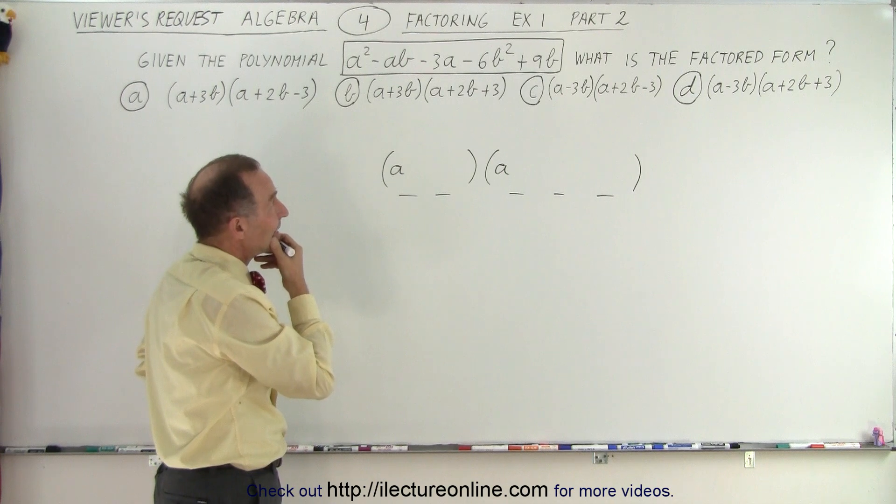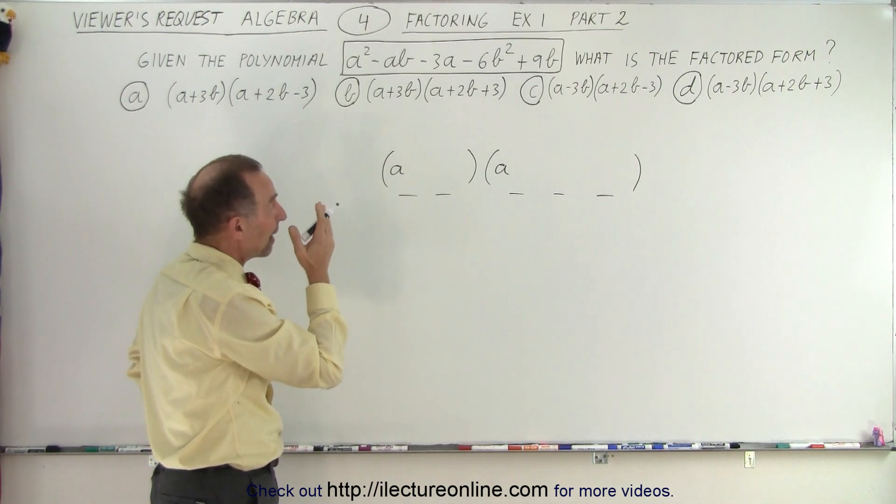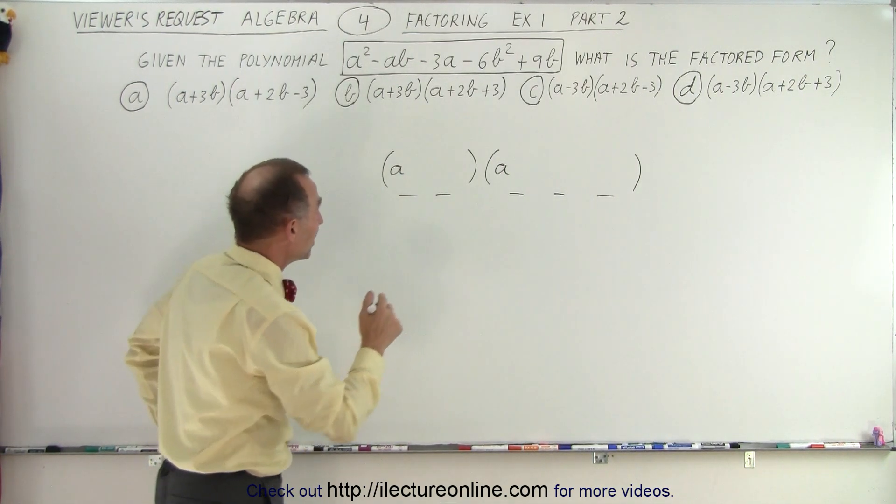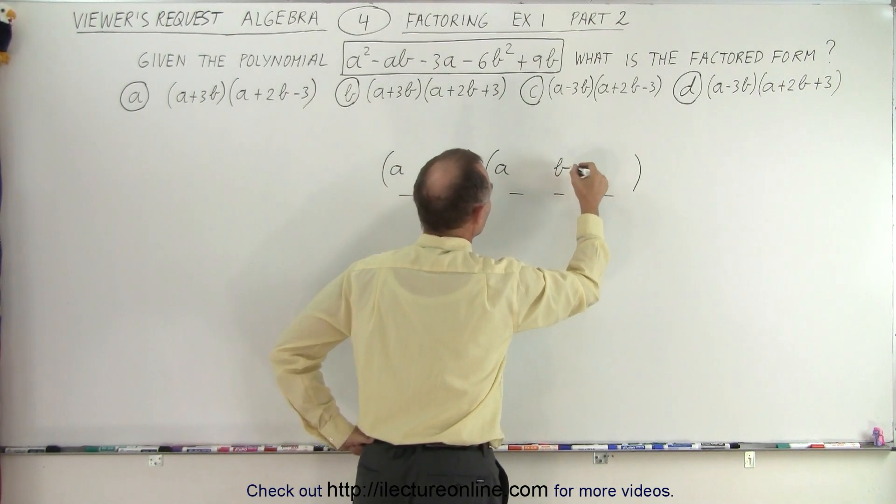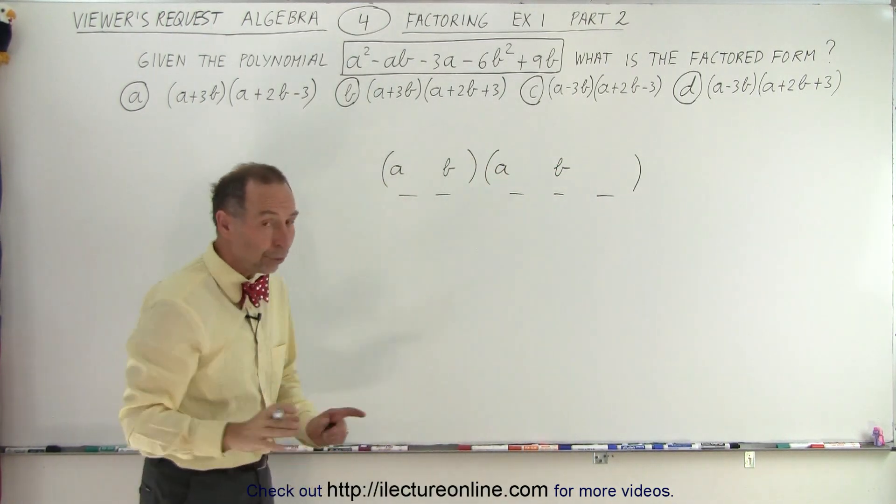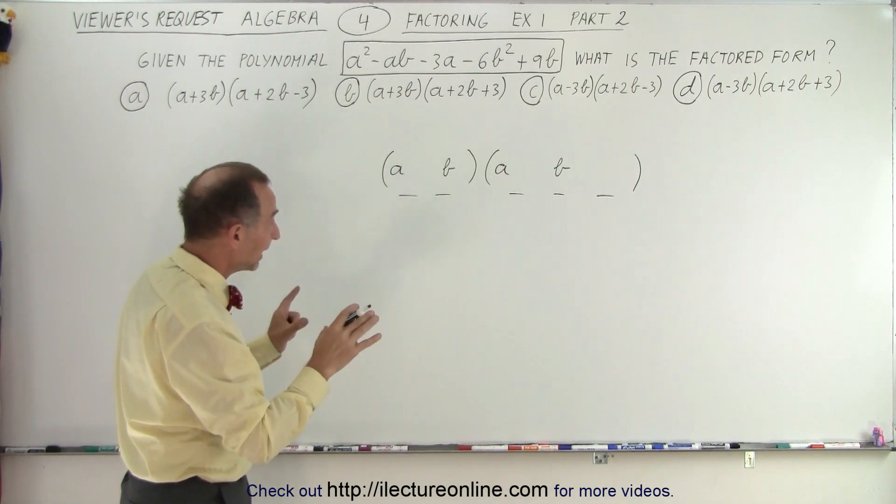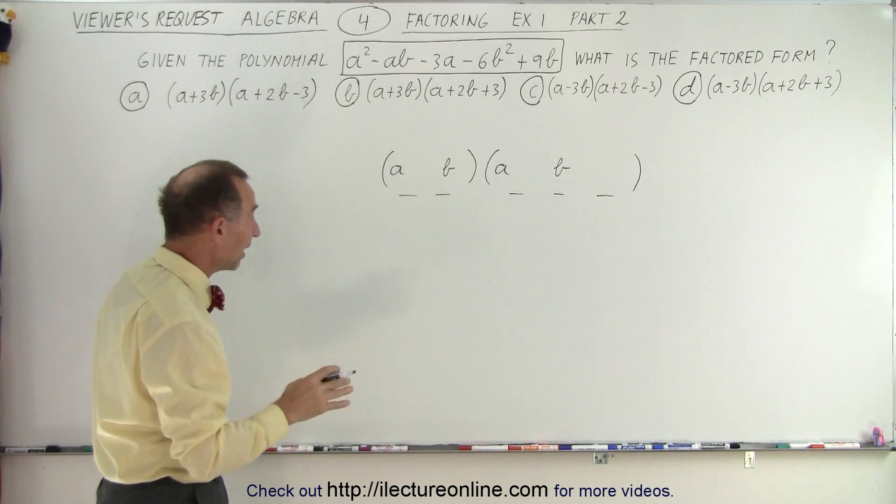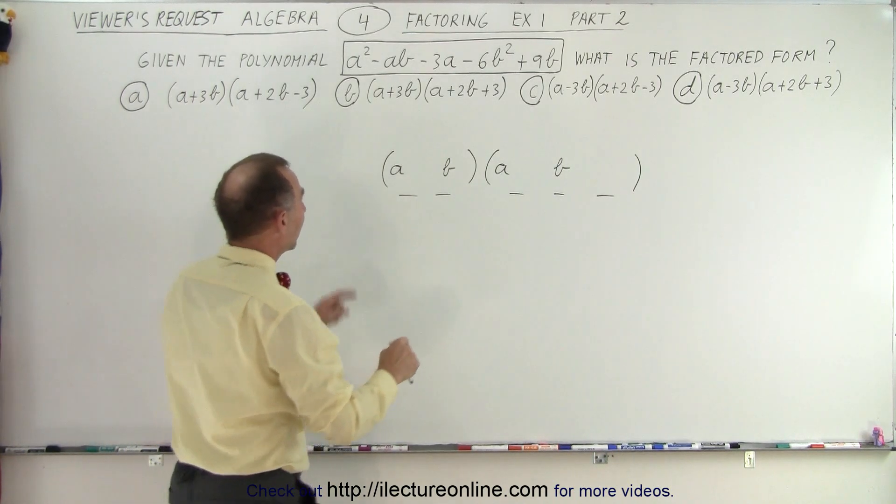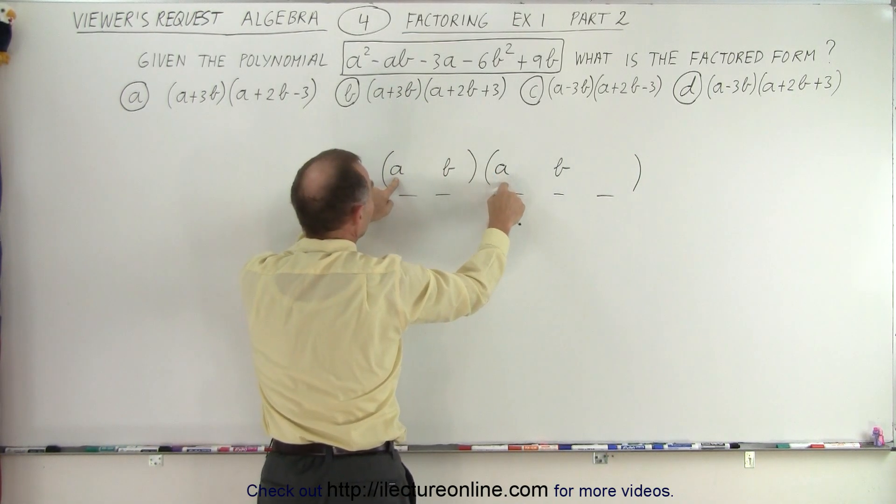Alright, then I see a b, a minus six b squared, which means I'm going to need a b here, and I'm going to need a b here as well. Notice I have not yet plugged in any of the coefficients, and I've not plugged in any of the signs. But so far, I have a times a that gives me a squared, so these are complete.